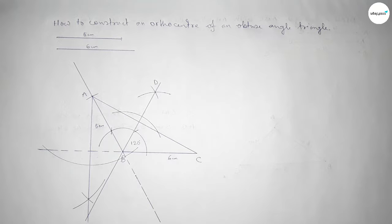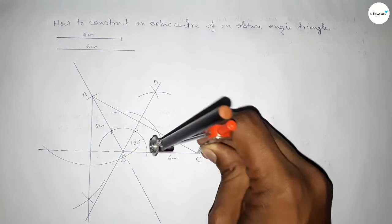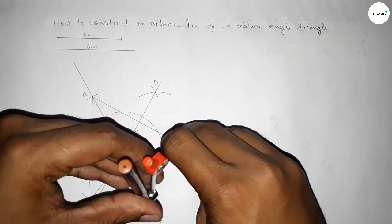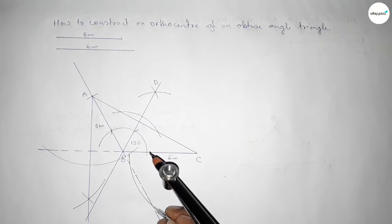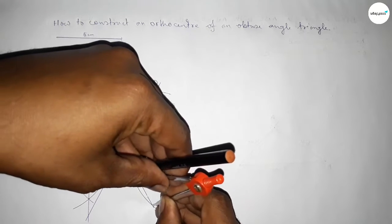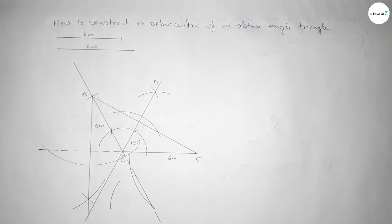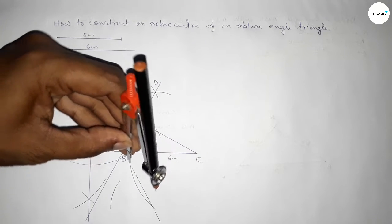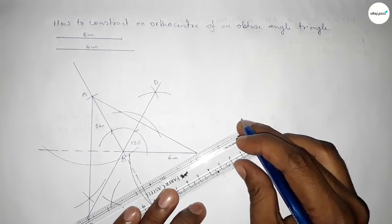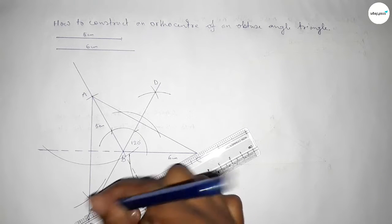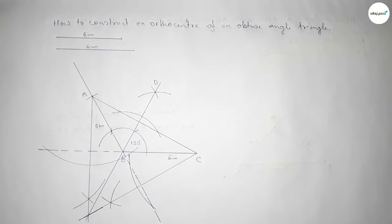Next, drawing a perpendicular line from point C to line AB. Putting the compass on point C and taking any length, drawing an arc. Then taking greater than half and drawing an arc, and cutting on the other side — both curves intersect at a point. Joining this perpendicular line, and all three perpendicular lines intersect at point H.